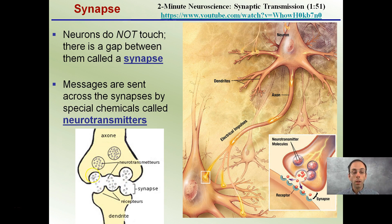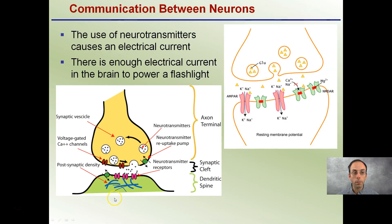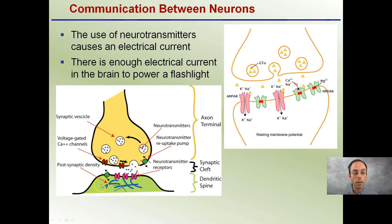Neurotransmitters are what's being passed through the physical space between our two neurons. The end here is our axon, and here is the dendrite of the next neuron. The use of neurotransmitters causes an electrical current — there's actually enough electrical current generated in your brain to power a flashlight, indicating just how many neurons are being actively fired. Our receptors are very important, occurring in the synaptic cleft, that physical space between the axon terminal and the dendritic spine of the next neuron.